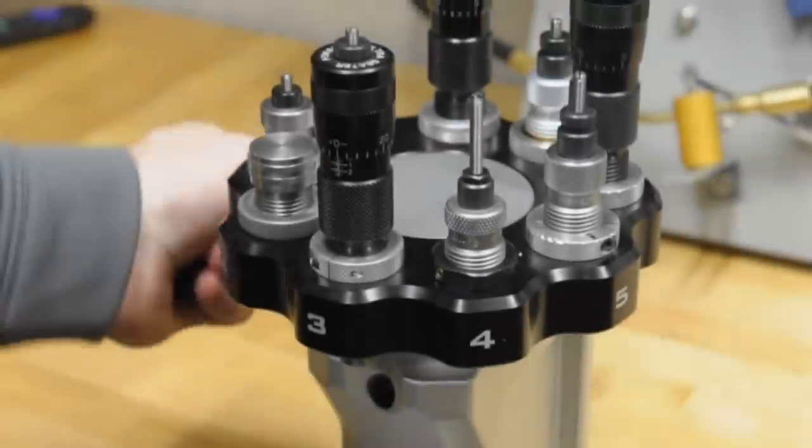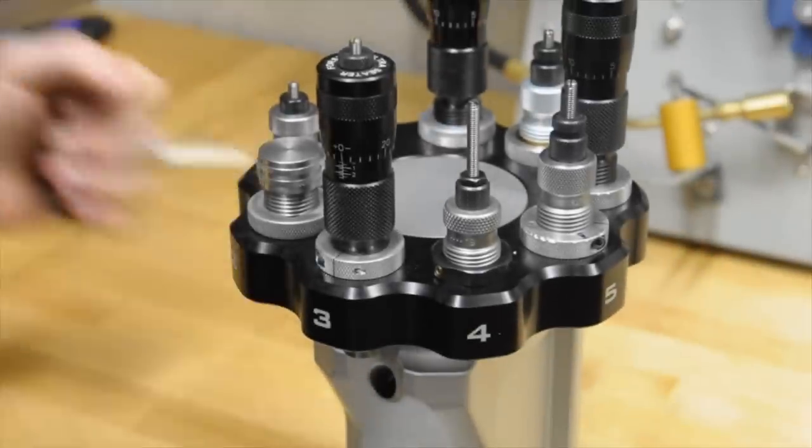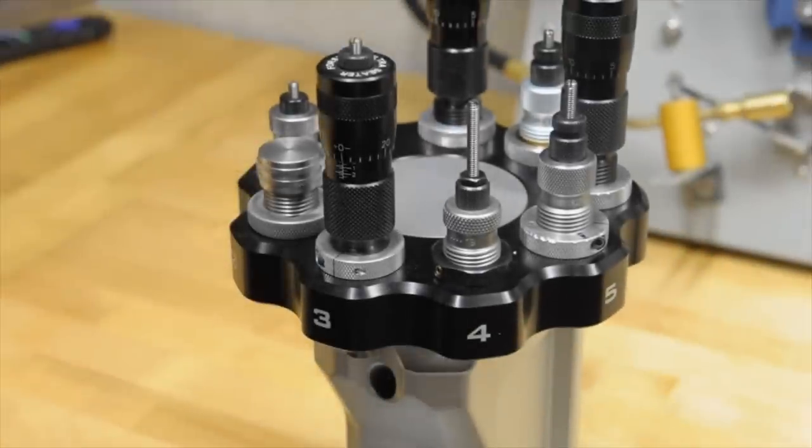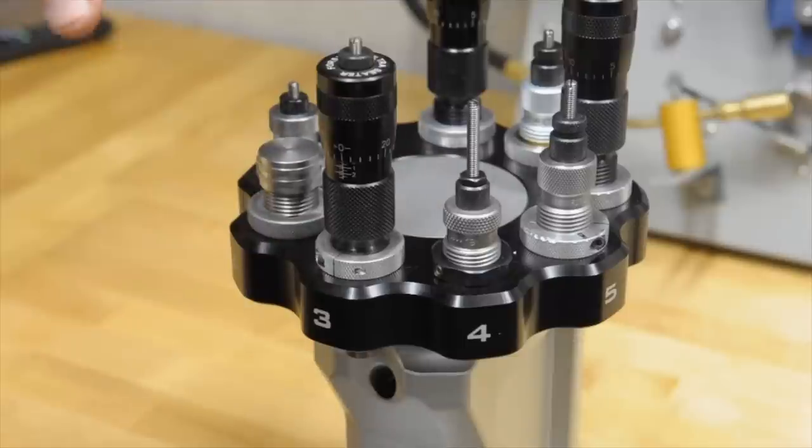Now after we have our brass primed, mandrel all set up, ready to go, we're going to move on to seating. So whatever press you have is going to determine, obviously, where your seating die is. There's a lot of other turret presses like this where they have a head with multiple stations for dies.